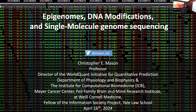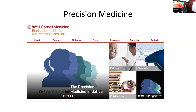We've been talking for a while about precision medicine. We have an institute here for precision medicine at Cornell, and now almost everybody has a precision medicine institute. You can't really be in medical school today without having some precision medicine center, institute, or group.